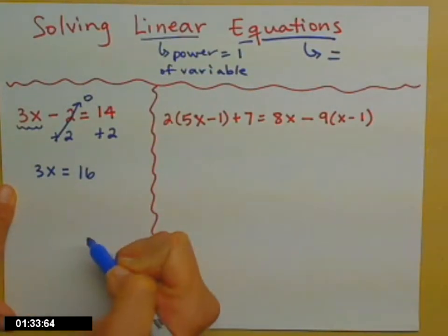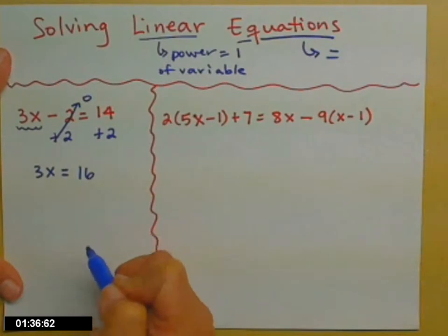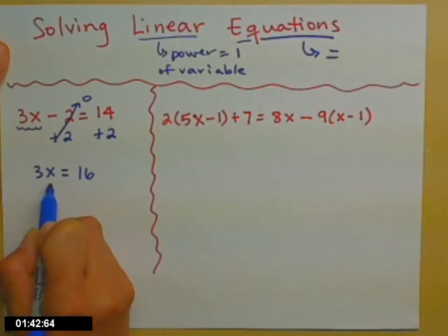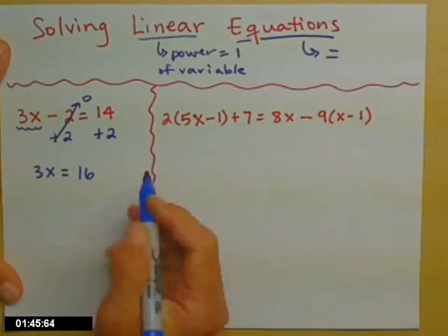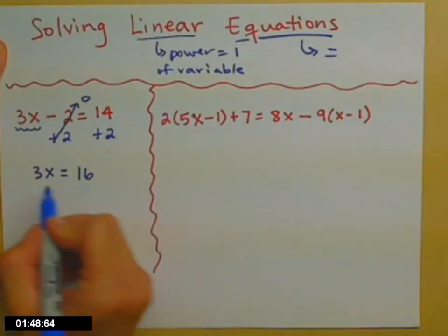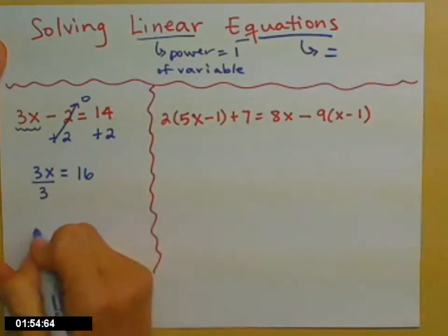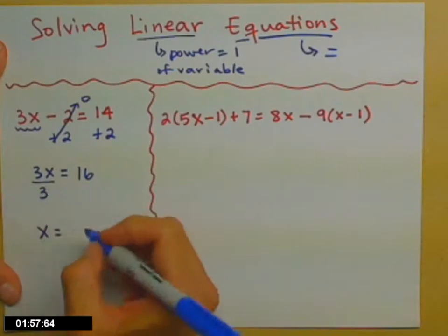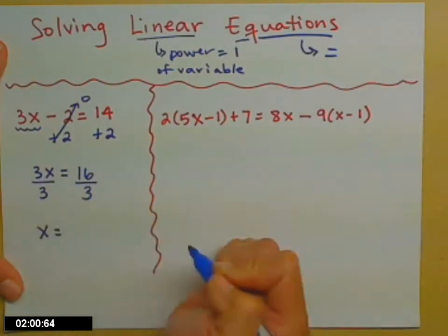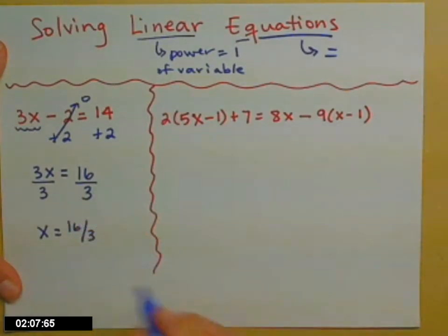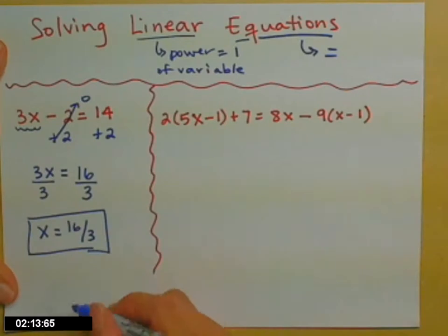So now 3x equals 16. That would be fine if I wanted 3x's, but usually you only want 1. To get rid of the 3, I need to do the opposite operation. The 3 and the x are attached with multiplication, so the operation that undoes multiplying is dividing. If I divide the left side by 3, then 3 over 3 is 1 — that gets me the x I want. But I have to do the exact same thing to both sides, so I divide the right side by 3 as well. That gives a final answer of 16 thirds. Remember, improper fractions are the preferred form, and this one doesn't reduce — no common factors between 16 and 3.